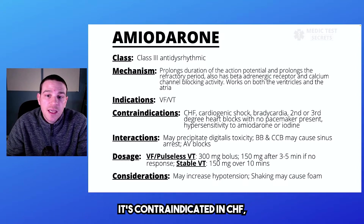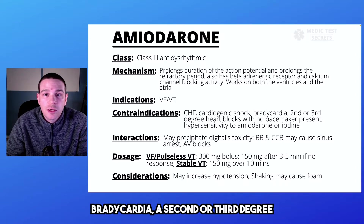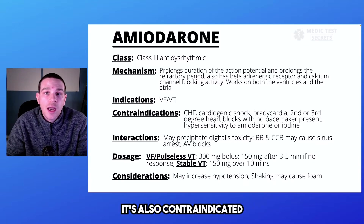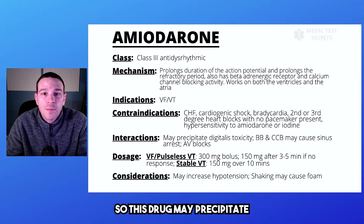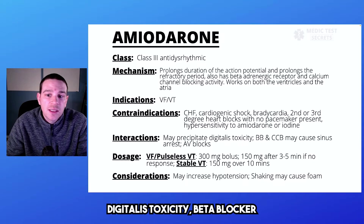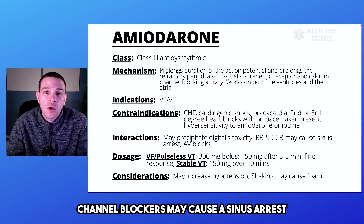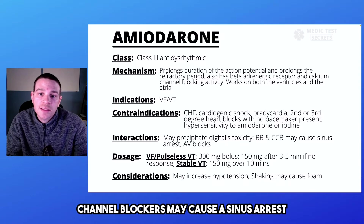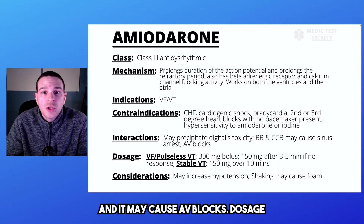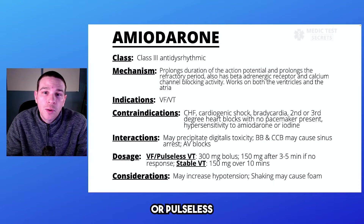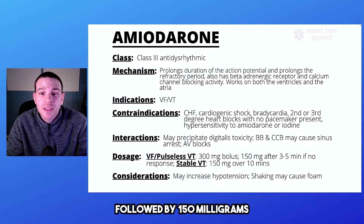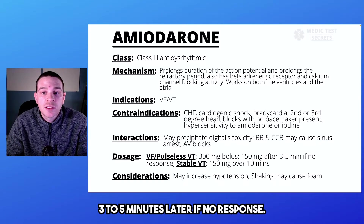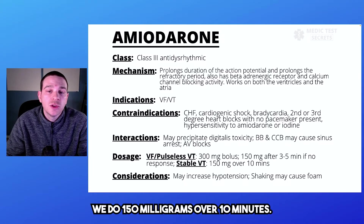Amiodarone is contraindicated in CHF, cardiogenic shock, bradycardia, second or third degree AV blocks, and hypersensitivity to the drug or to iodine. It may precipitate digitalis toxicity; beta blockers and calcium channel blockers may cause a sinus arrest, and it may cause AV blocks. For ventricular fibrillation or pulseless ventricular tachycardia, we do a 300 milligram bolus followed by 150 milligrams three to five minutes later if no response. For stable VTAC, we do 150 milligrams over 10 minutes.